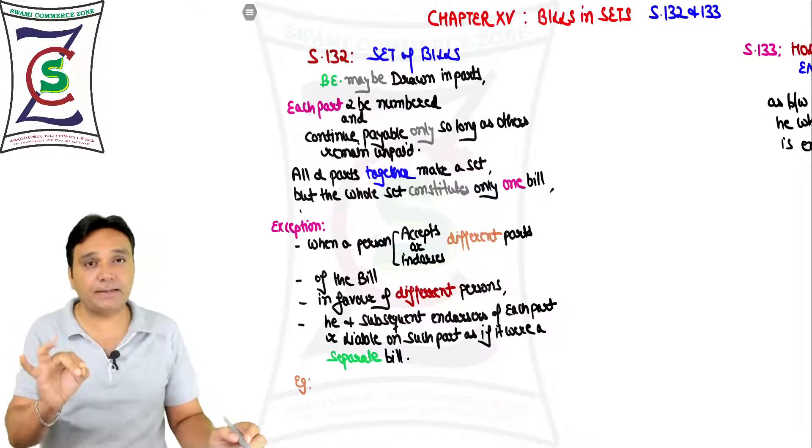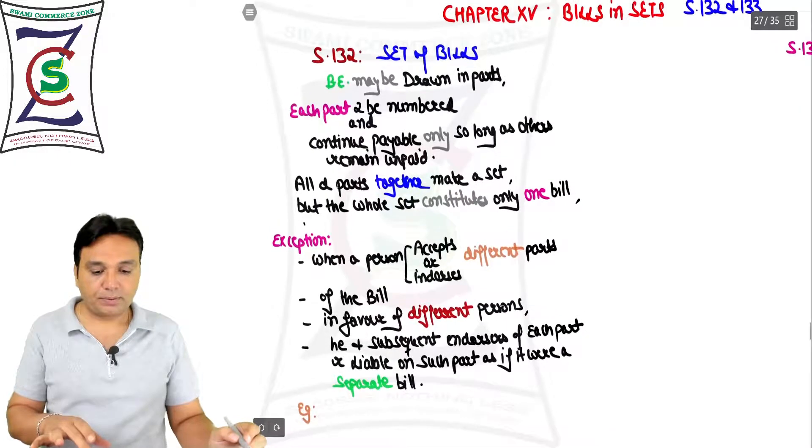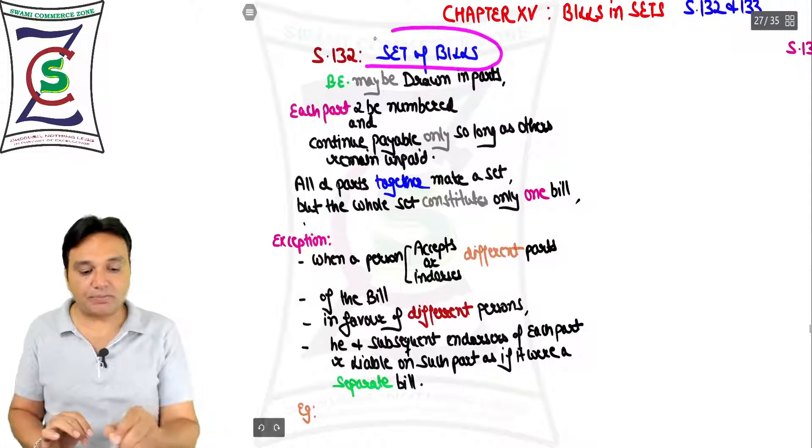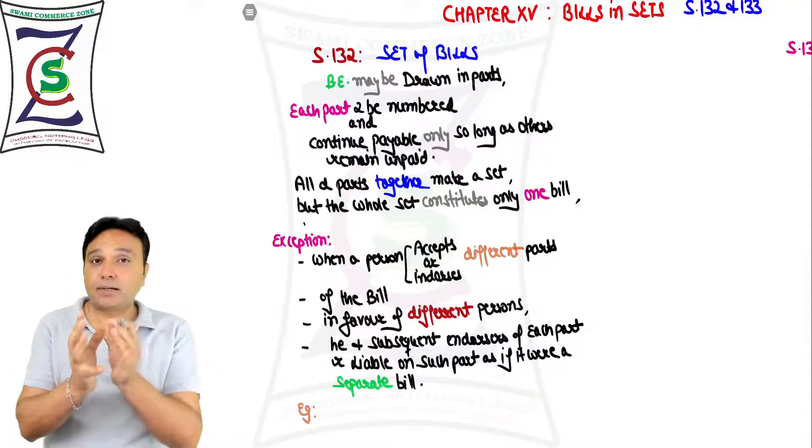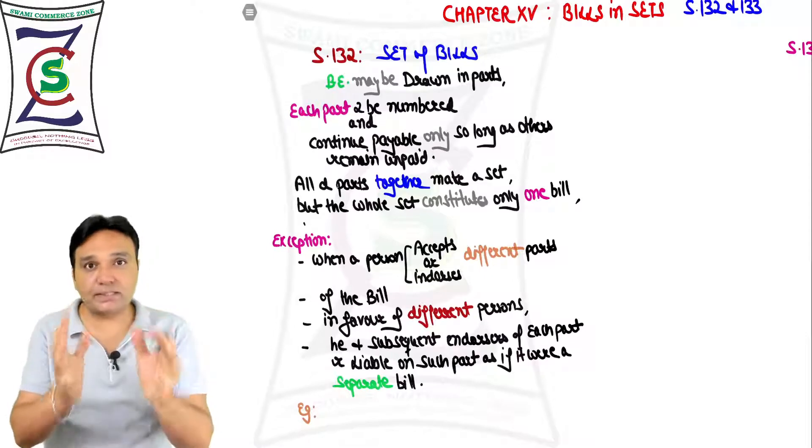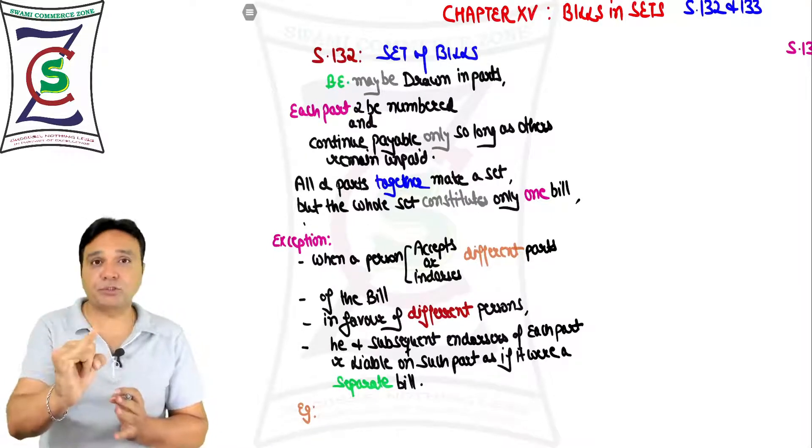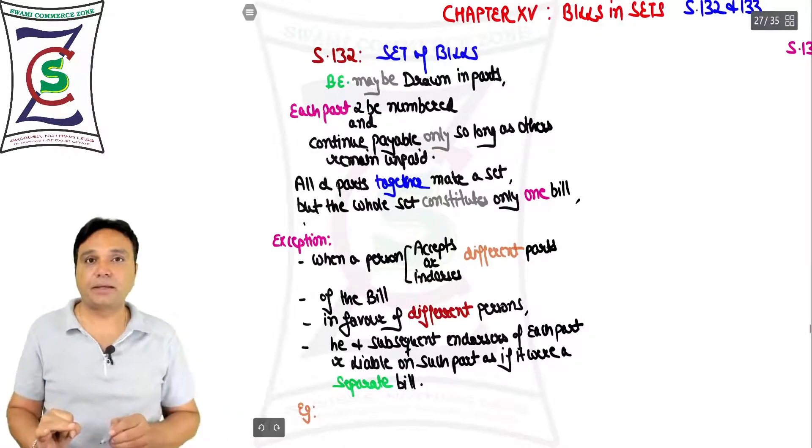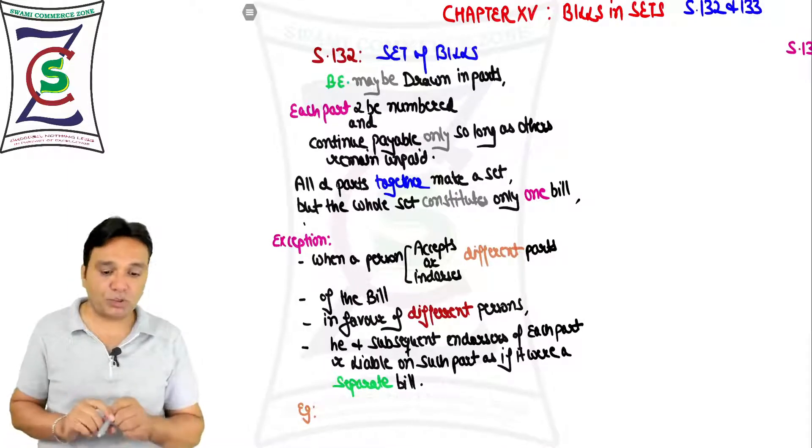Section 132 talks about set of bills. This chapter is only talking about one instrument and that is the bill - not the check, not the promissory note. This is very important to consider.